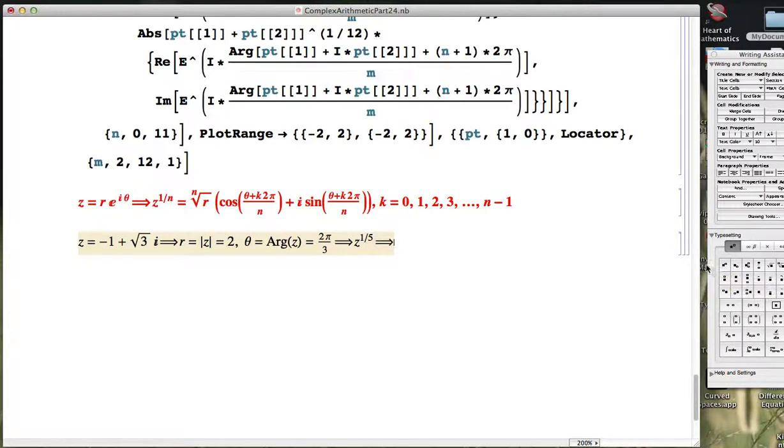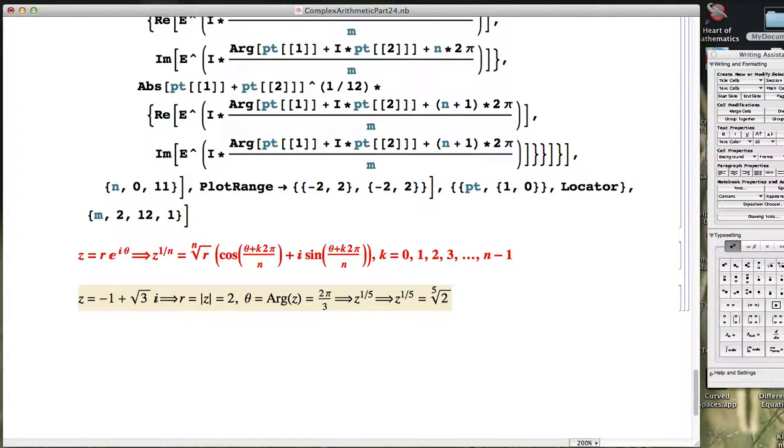According to this formula here, we're going to have to find the fifth root of 2, the non-negative fifth root of 2. So I replace the n with 5, I replace the r with 2. And that is what it is. We can approximate it, but let's just leave it as a symbol. That's going to be the modulus of all the fifth roots. And for sake of time, let's go ahead and write these in exponential polar form. And you can convert it to rectangular form with cosine and sine if you desire.